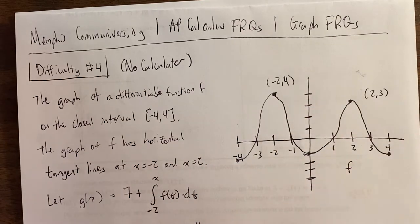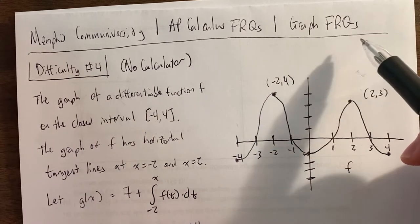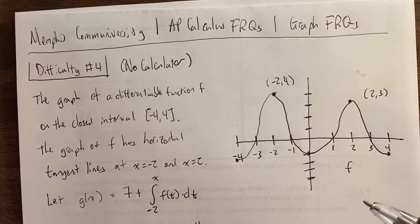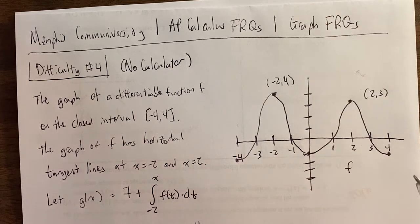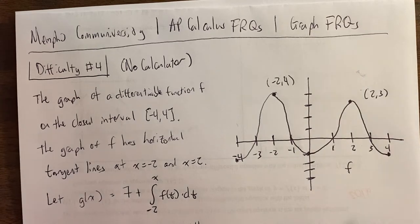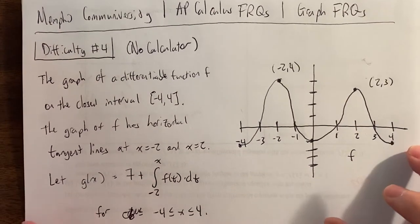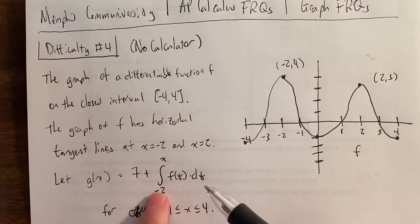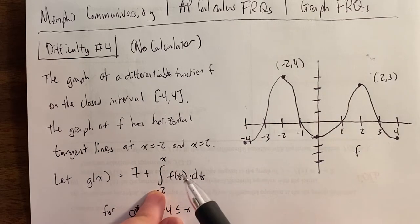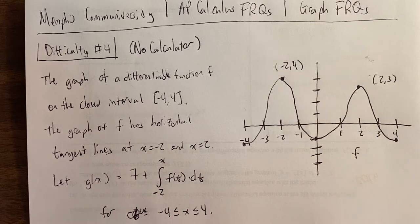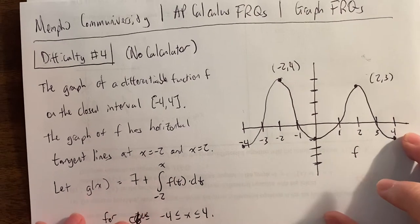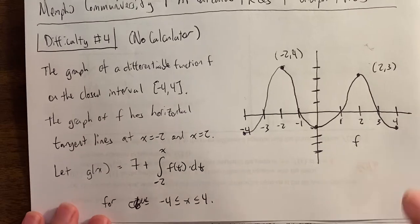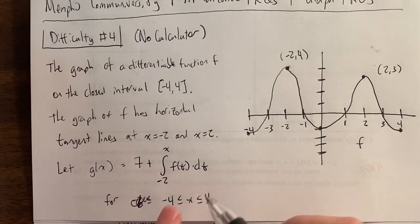If you're not familiar with our channel, what we do is go from difficulty 1 through 10 for each free response topic, slowly progressing in difficulty. For graph free response questions there are two main types: one where all the questions are about f and the graph is of f prime — that was in our difficulty 1 and 3 video and will also be in difficulty 5 — but there's another scenario where there's a function g of x expressed as an integral.